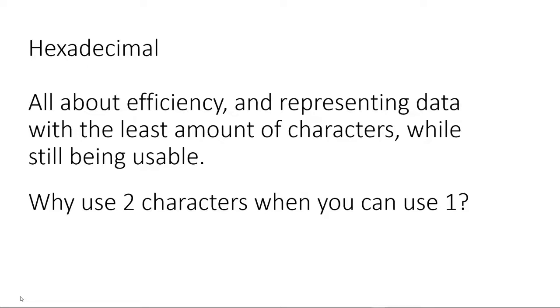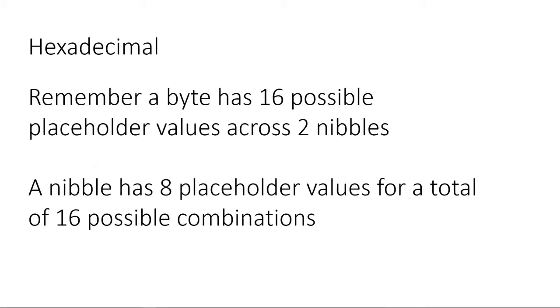But when data gets bigger, we have nibbles. Now, even though a bit takes a very tiny amount of storage space, a string of bits represented on a screen does not. It starts to take more and more space. So, as you'll recall, a byte with its 8 placeholders can show 16 possible positional variables. A nibble has 8 possible positional values. Makes sense because a nibble is half of a byte.